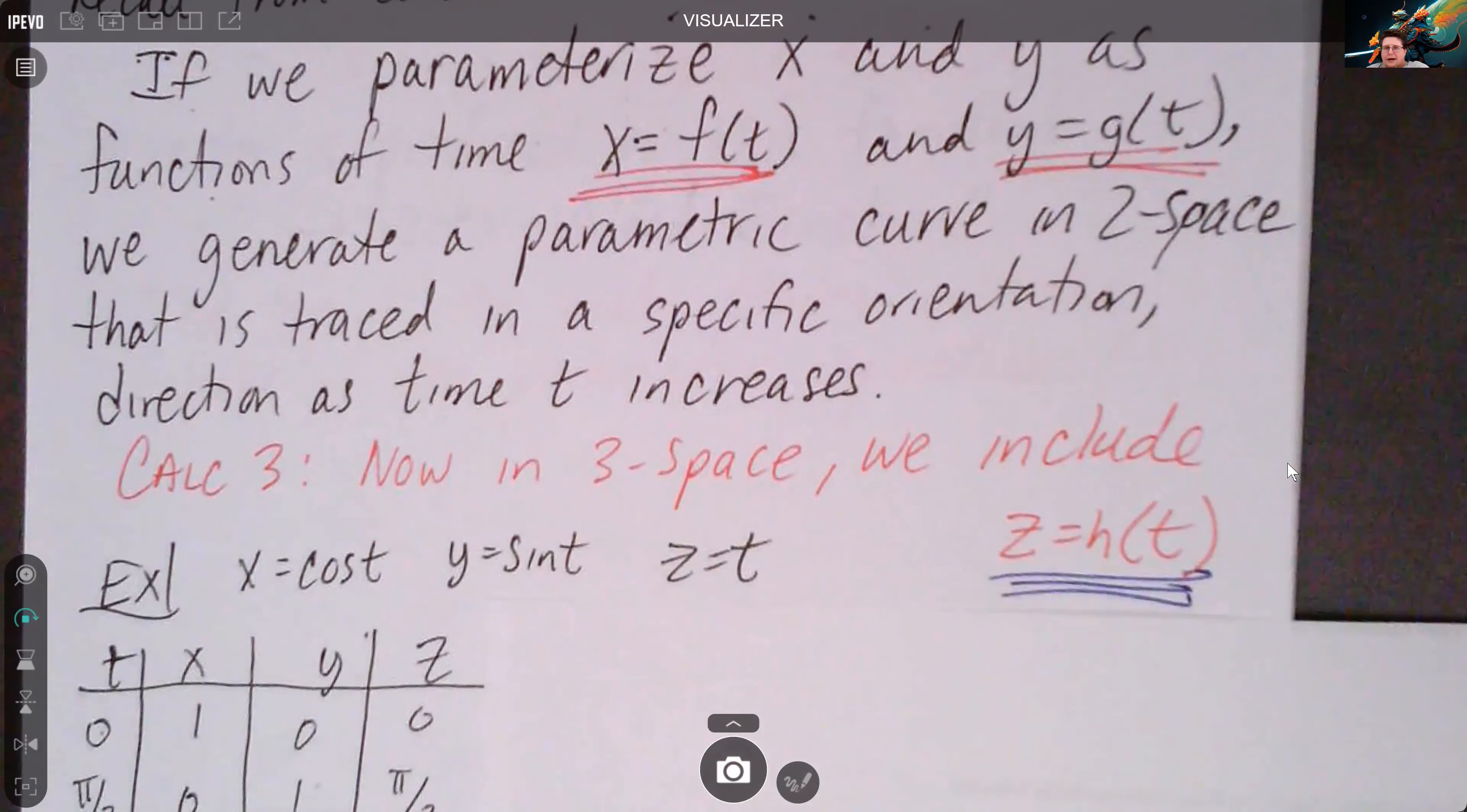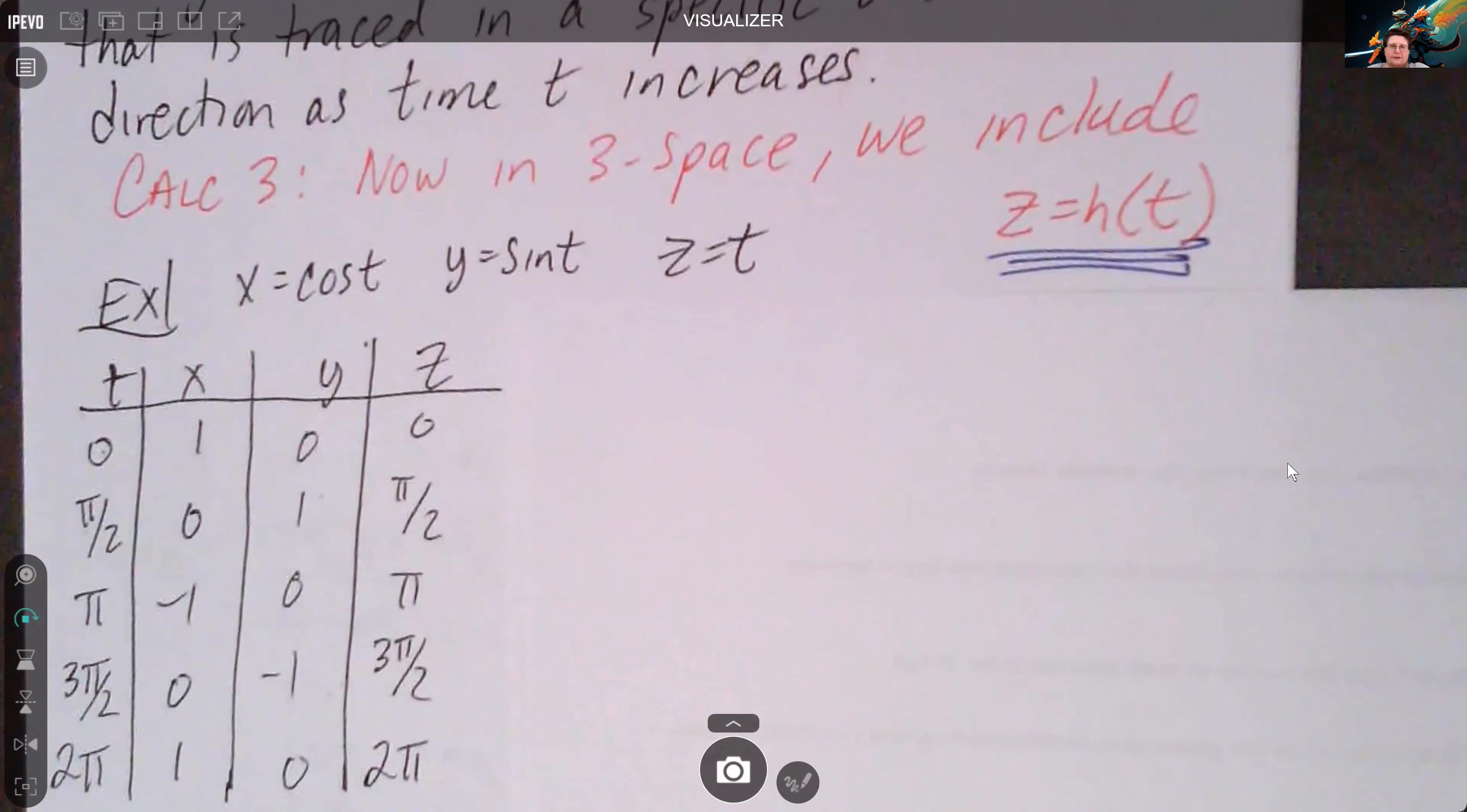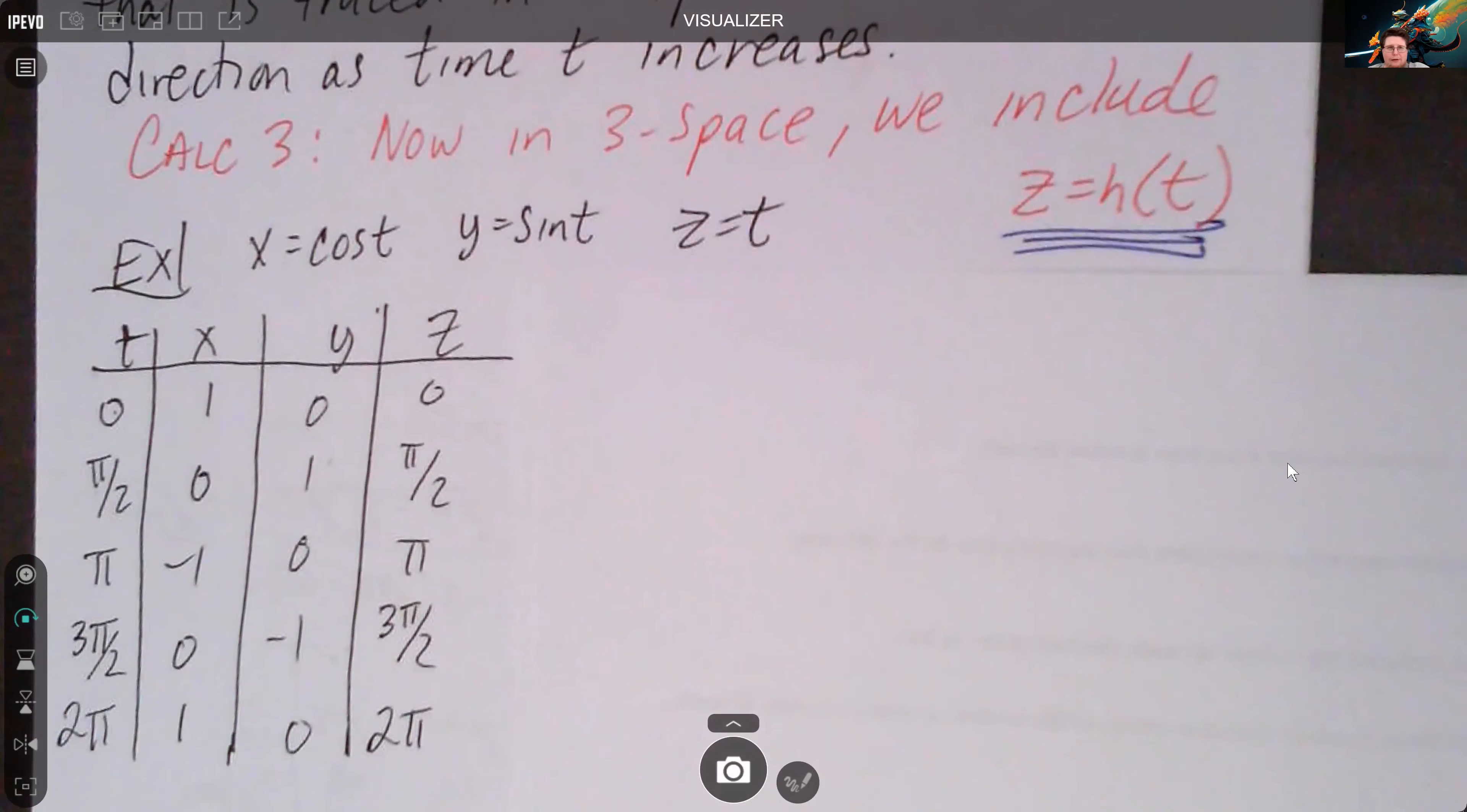So let's just take a look at an example. I've got x equals cosine t, y equals sine of t, and z equals t. These are going to be our functions.